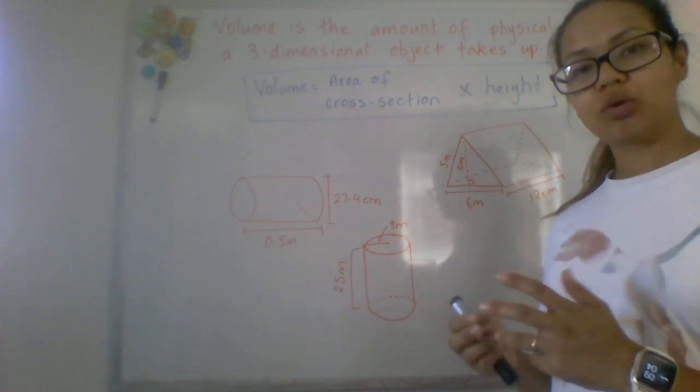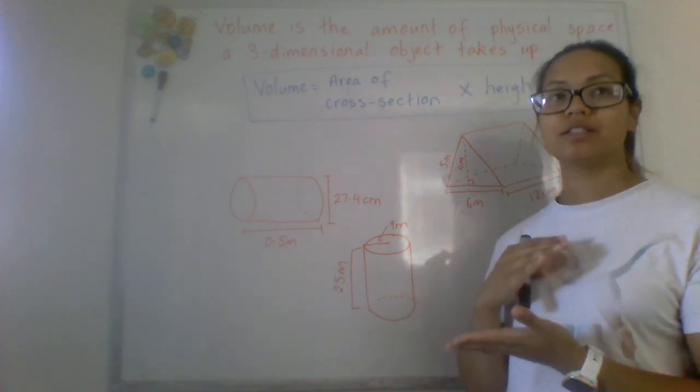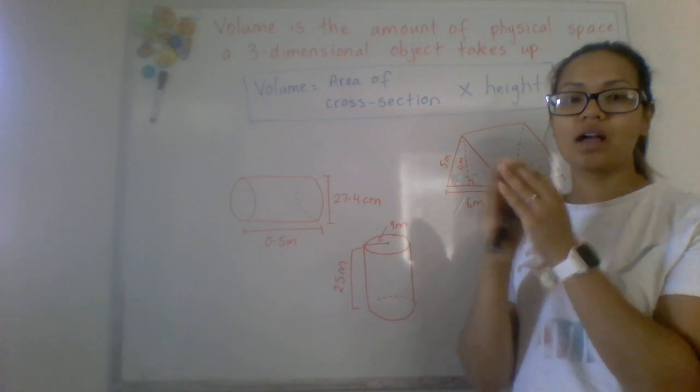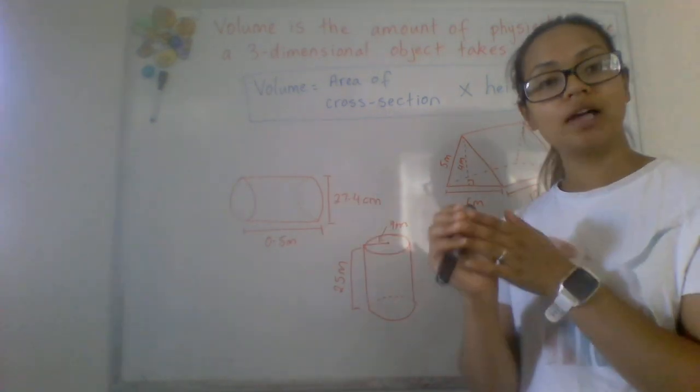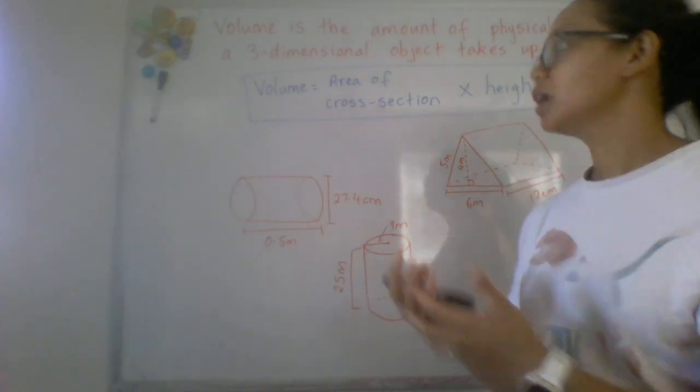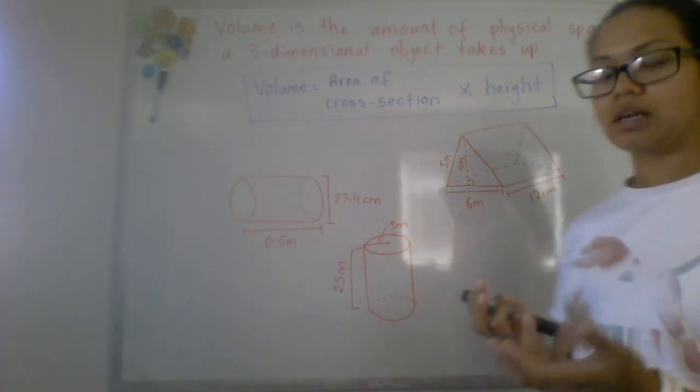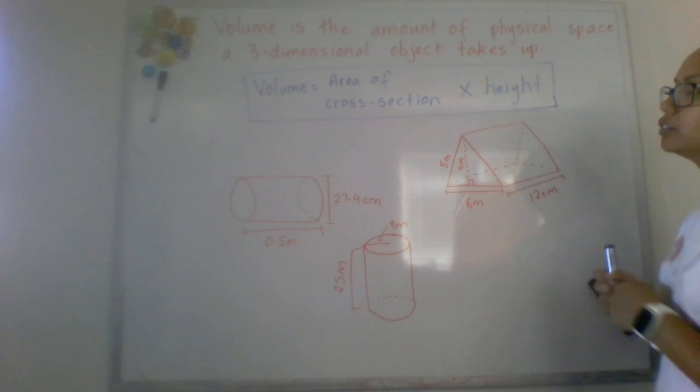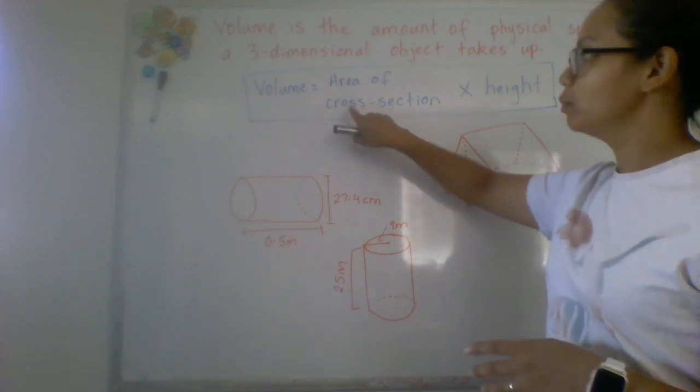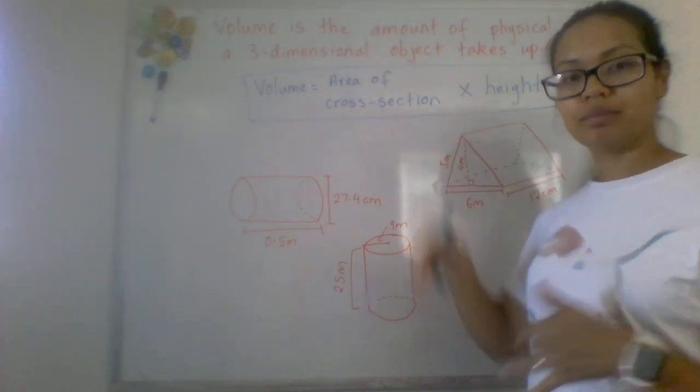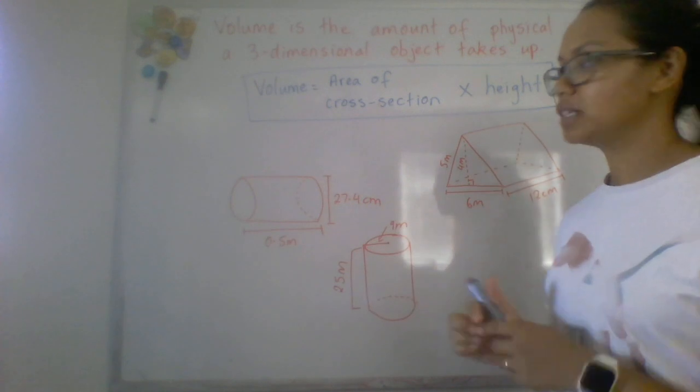In the last video we talked about what defines a prism and we defined what the cross-section is and how to find the area and then multiply that by the depth or the height which then gives us volume. Just to refresh, volume is the amount of physical space that a three-dimensional object takes up. So the formula that we looked at last time was the area of the cross-section times our height.